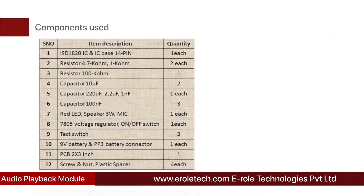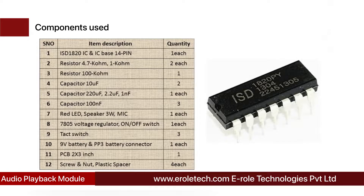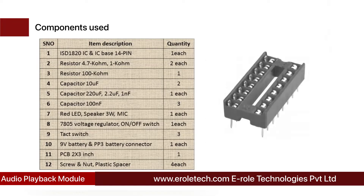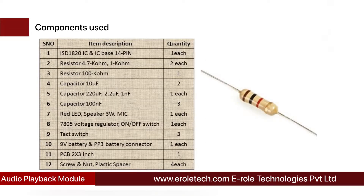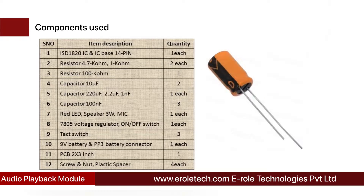These are the components needed in this project: ISD 1820 IC, 14-pin IC base, 2 × 4.7 kilo ohm resistors, 2 × 1 kilo ohm resistors, 100 kilo ohm resistor, 2 × 10 microfarad electrolytic capacitors, 220 microfarad electrolytic capacitor.